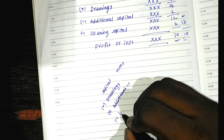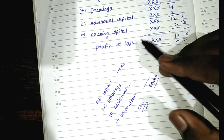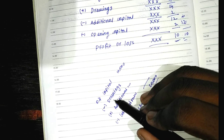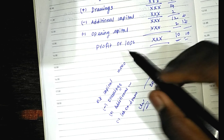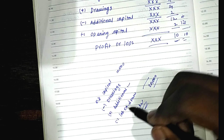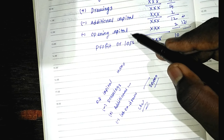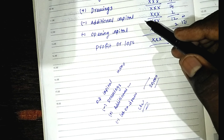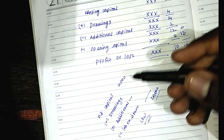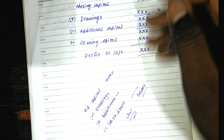If there is interest on drawings, what do we do in the balance sheet? We apply the capital, and we apply the profit or loss. So in the balance sheet: capital, minus drawings, plus additional capital. You can use additional capital and opening capital to add or list items.